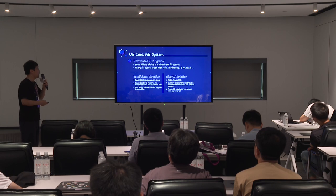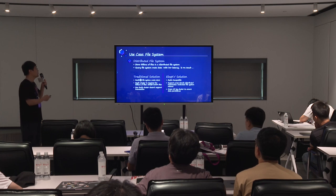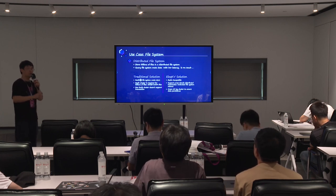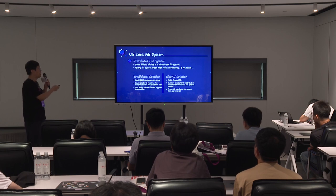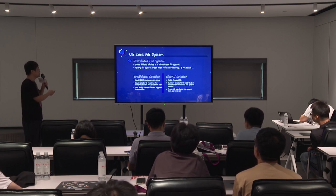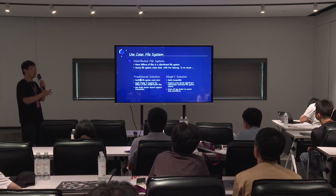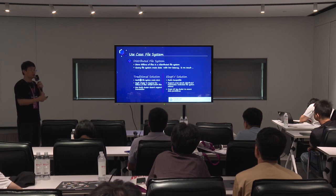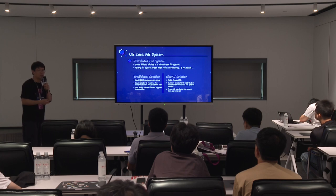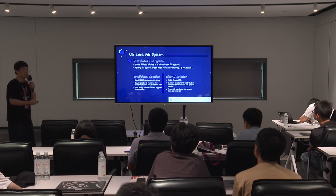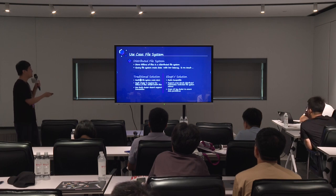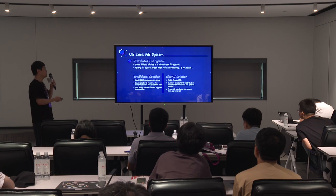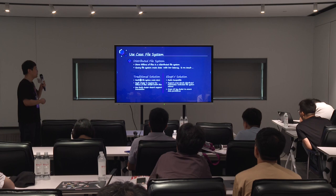Next, I will share some use cases. The first one is a file system. Suppose you have a distributed file system and need to store billions of files. You need a metadata store to quickly perform operations like LS or RM. The traditional solution uses Redis, but to store 100 million files, Redis uses 30 gigabytes. With billions of files you need to use Redis cluster, but then you lose the transaction features and your data can be lost. Using LLKV as a replacement, it is Redis compatible, supports cross-shard distributed transactions, and makes your file system unlimited.